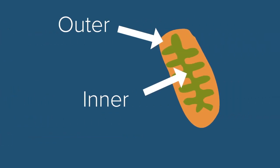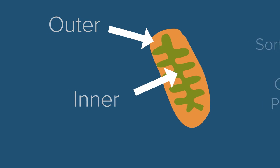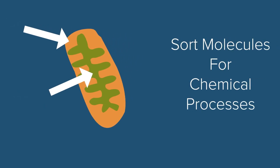Inside mitochondria, there are two membranes, an outer membrane and an inner membrane. The double membrane structure of mitochondria is really important to the process of cellular respiration because it allows mitochondria to sort molecules that it uses for chemical processes.